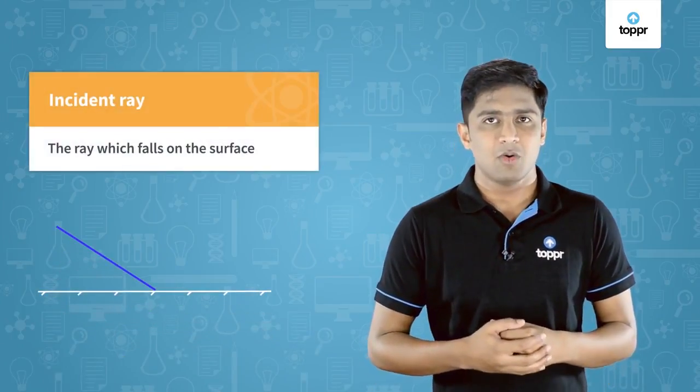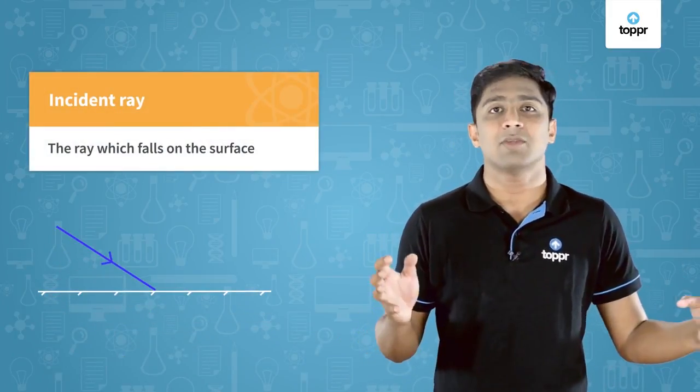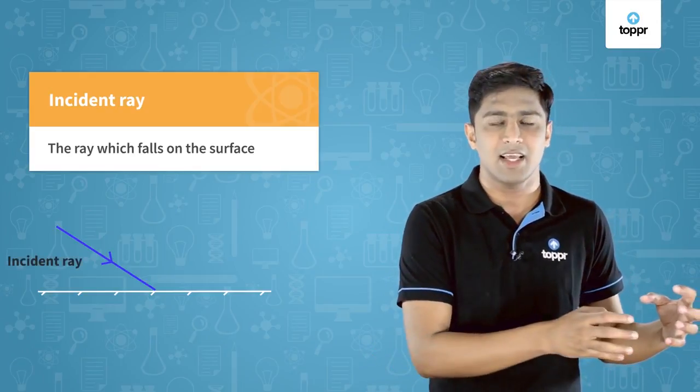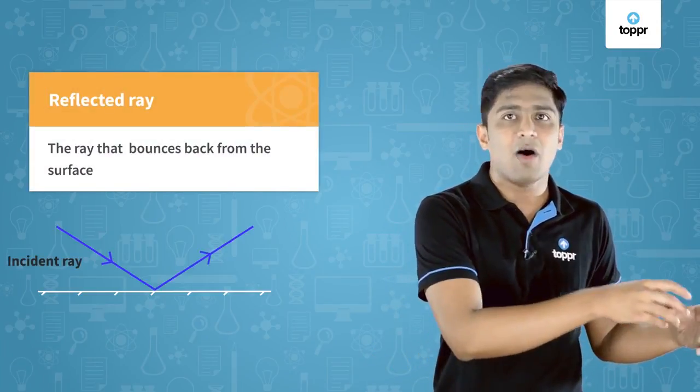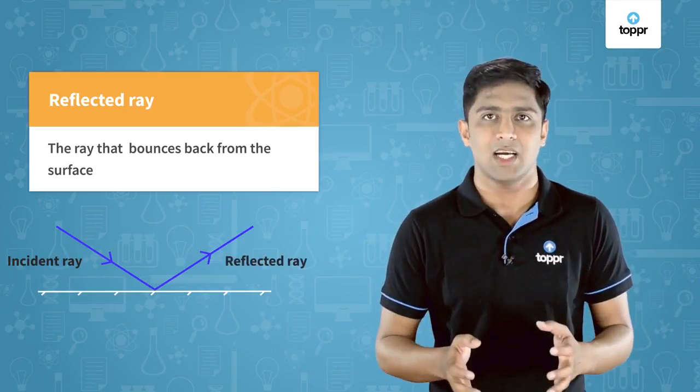As you have already learned in your previous classes, light travels in a straight line. So when we light a torch, a beam of light will be falling on a surface. Here we are just going to take a narrow beam of light called a ray. The ray of light which falls on the surface from the torch is called the incident ray, and the ray which bounces back from the surface is called the reflected ray.